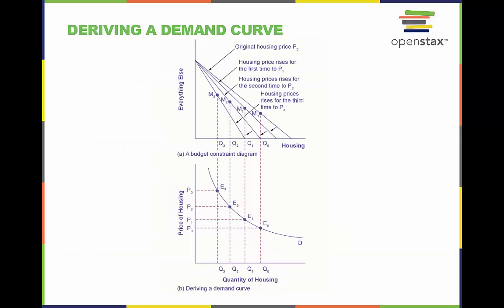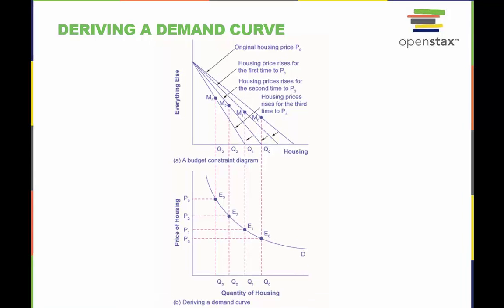Consumers demand what gives them the most utility for the price. This is basically what utility maximization is. We see on these graphs that we can extend the utility maximization exercise into the realm of demand curves.